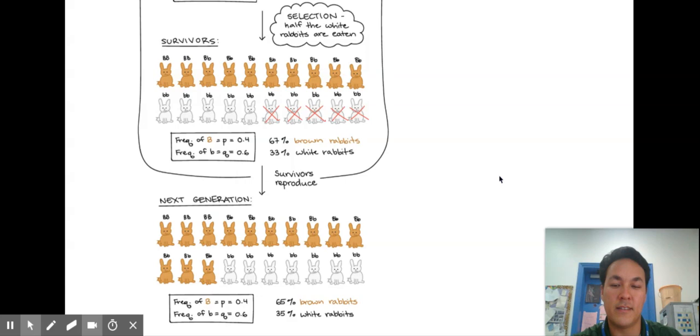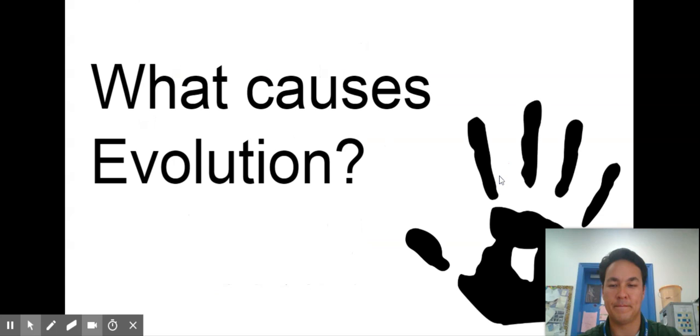These numbers you don't have to worry about you can take AP biology with me and you can really compute them it's called the Hardy-Weinberg equilibrium but for us you can just see that it's a change in the gene pool over time. All right so hopefully that helped you construct an explanation of what is evolution.